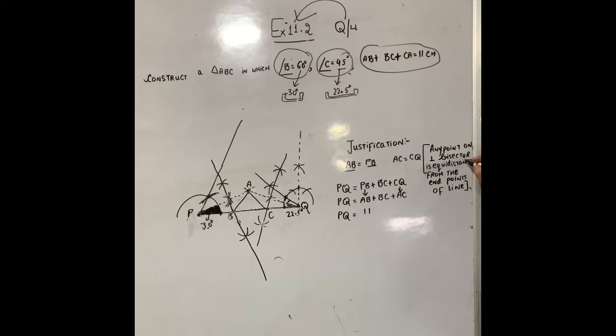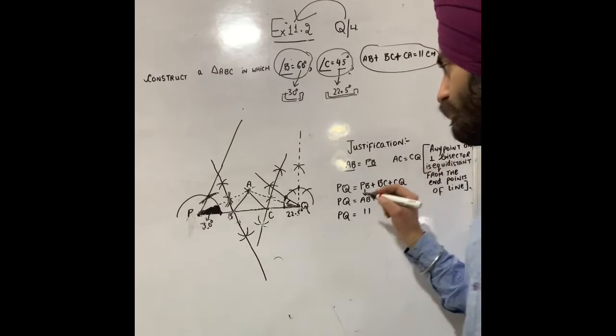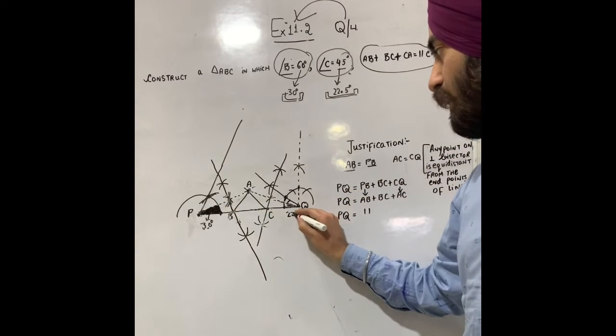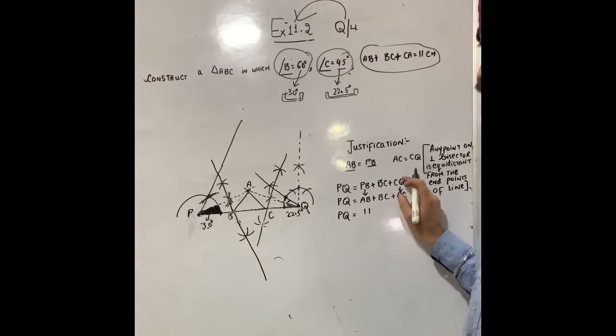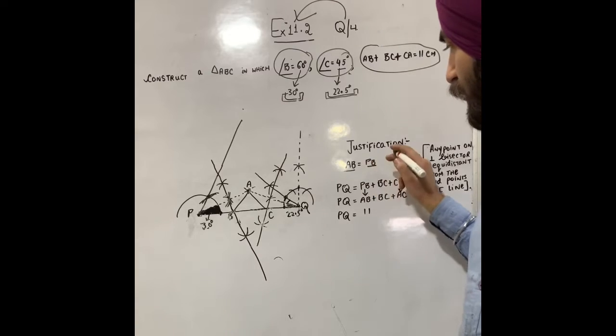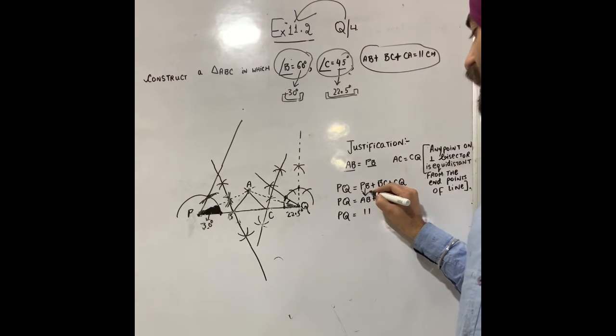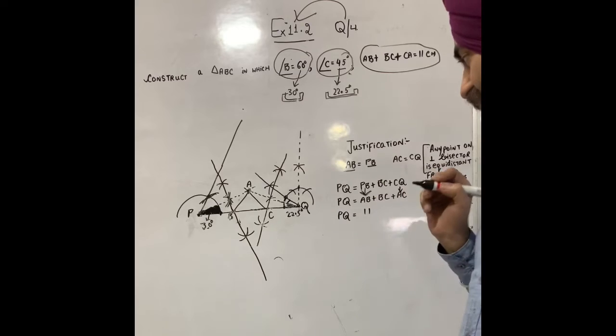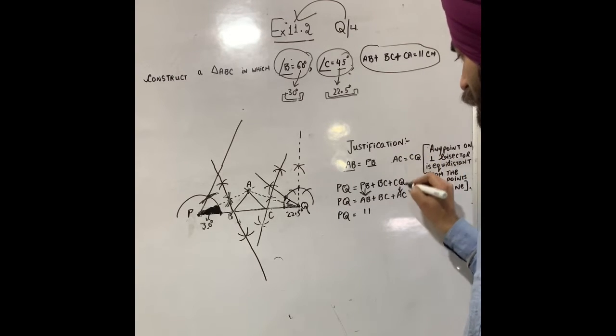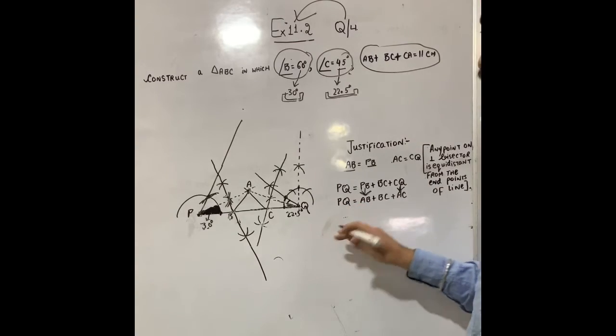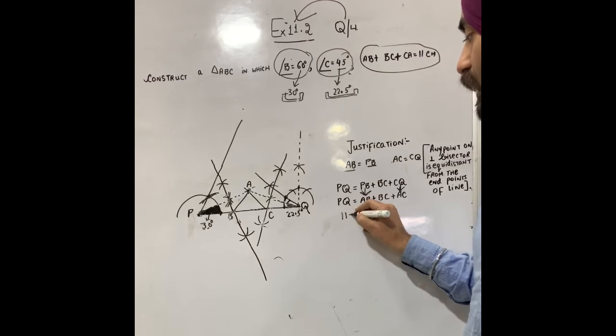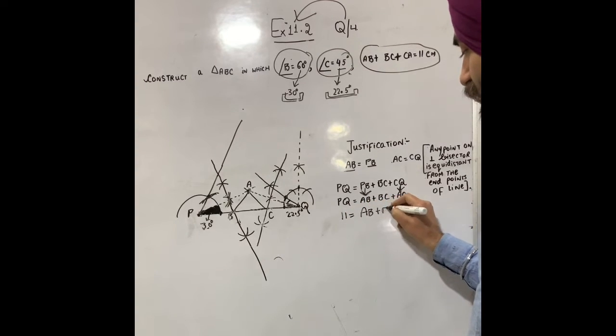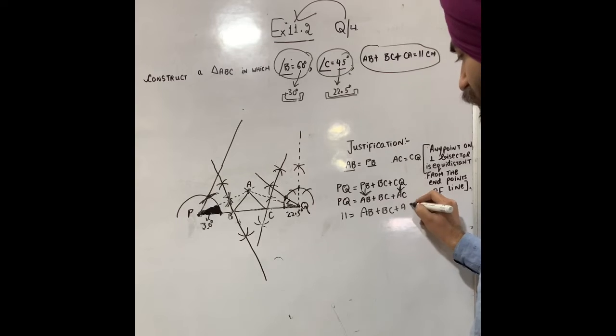Any point on perpendicular bisector is equidistant from the endpoints of the line. Now I know that this entire PQ is made of PB plus BC plus CQ. We proved above that PB equals AB, so I write AB in place of PB. And CQ equals AC, so I write AC in place of CQ. Therefore, AB plus BC plus AC equals 11 cm.